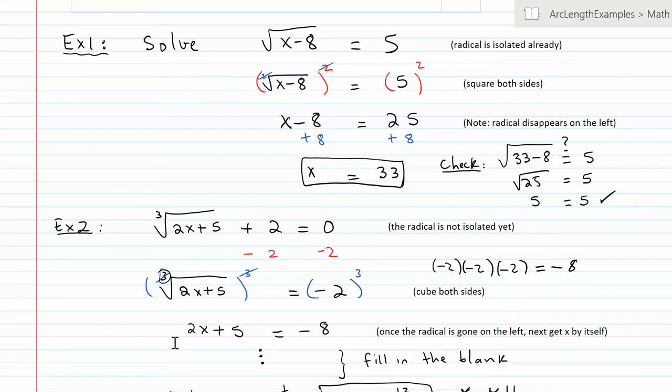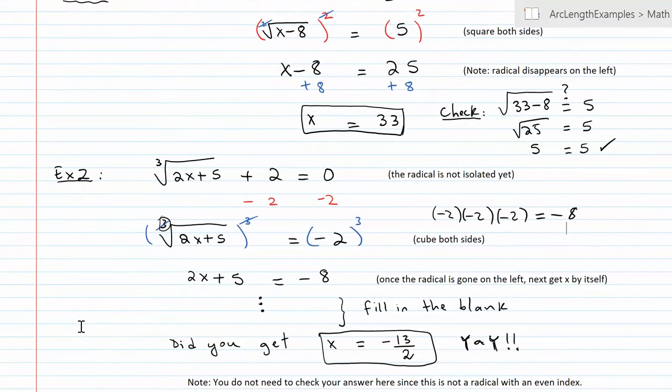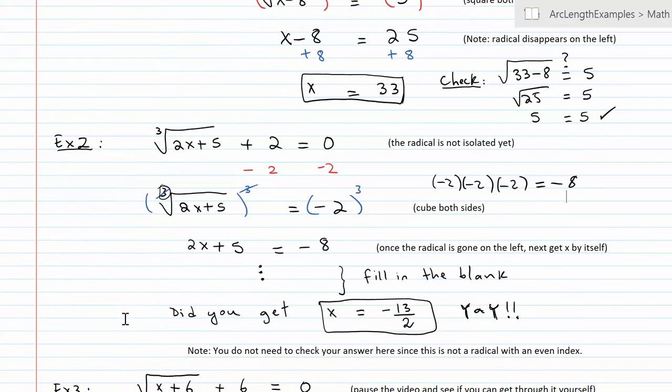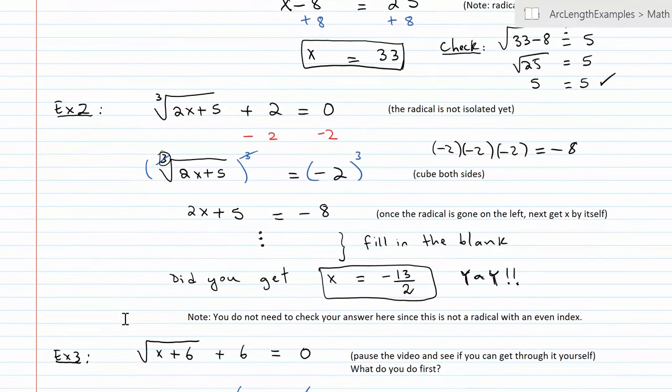On the left side, which is a nice side, the radical goes away once again. Okay, so now we can finally get x by itself. So I'll let you fill in the blank, and you should end up with the answer negative 13 over 2. In this example, I really do not have to check my final answer because the index was not even. So I can move on to the next example.